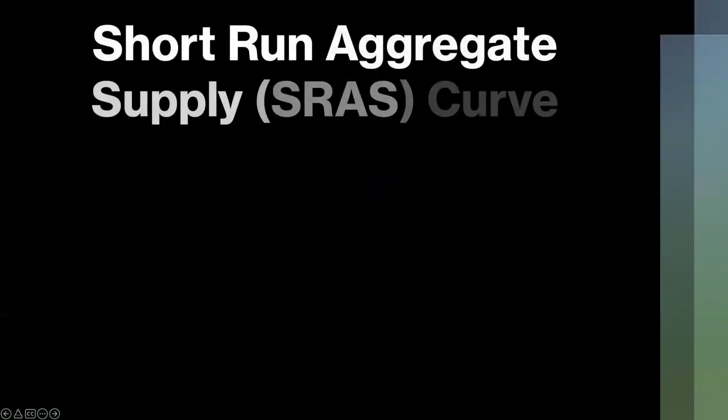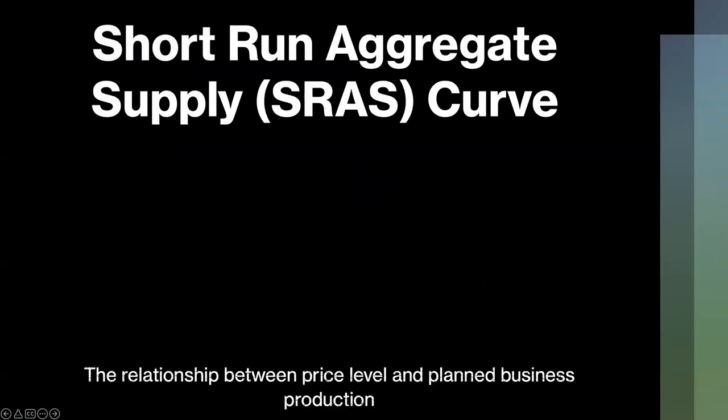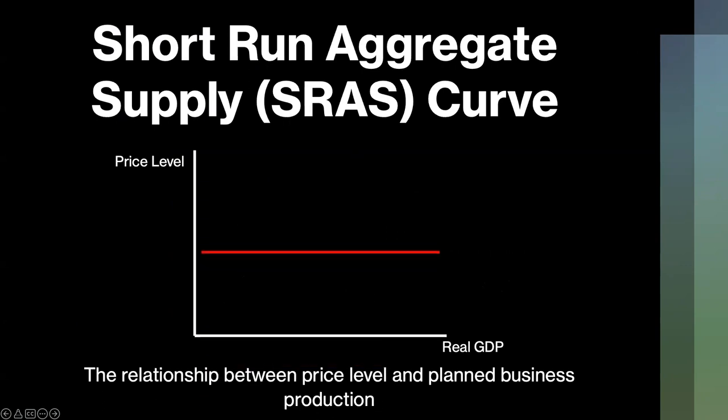This brings us to the short-run aggregate supply curve, which is the relationship between price level and planned business production. It is horizontal because it follows the Keynesian assumption that prices are considered sticky in the short run and do not change relative to a change in the output. There are three reasons that prices are sticky in the short run.